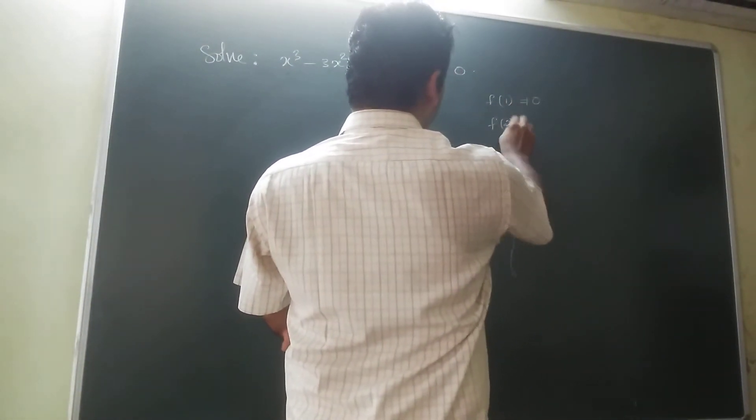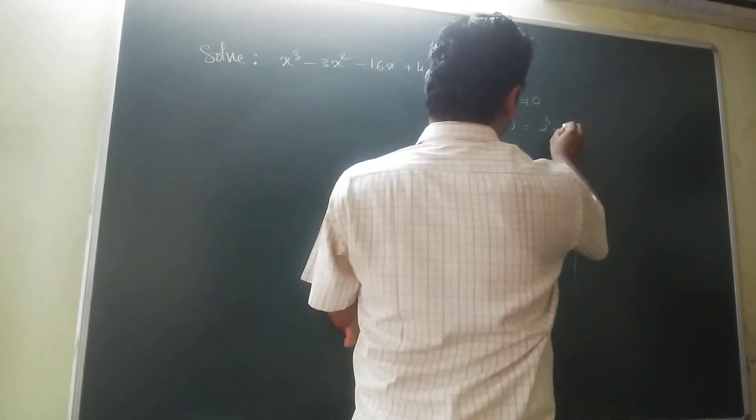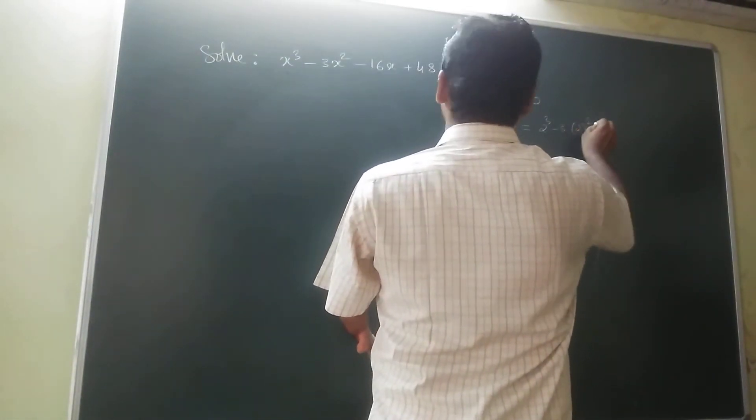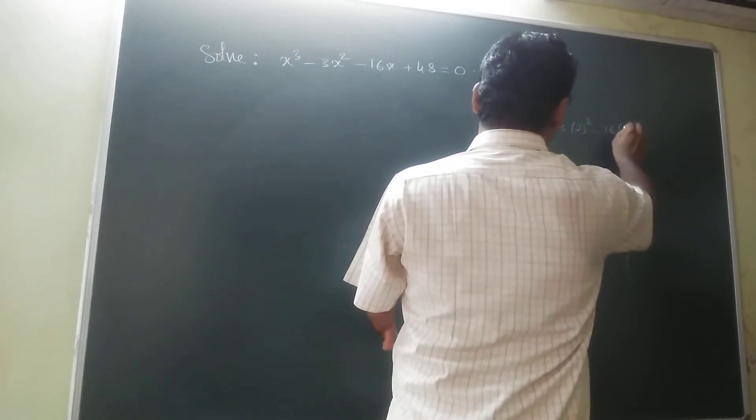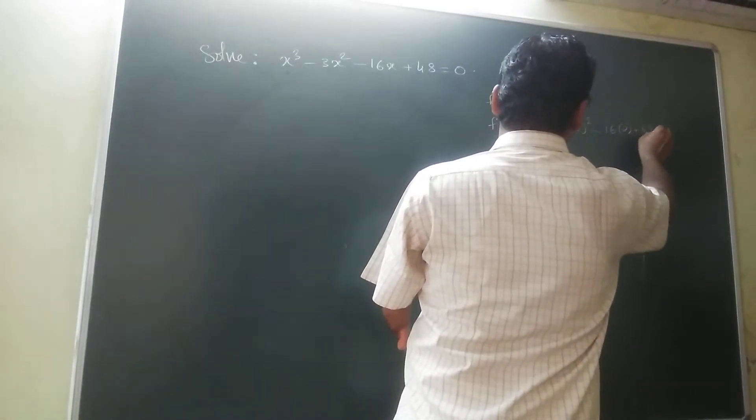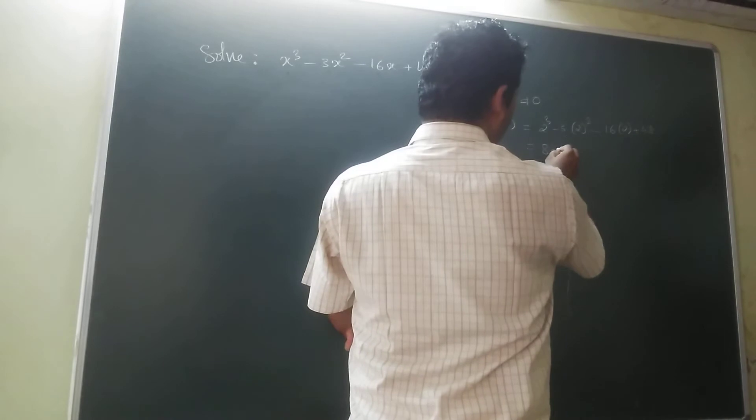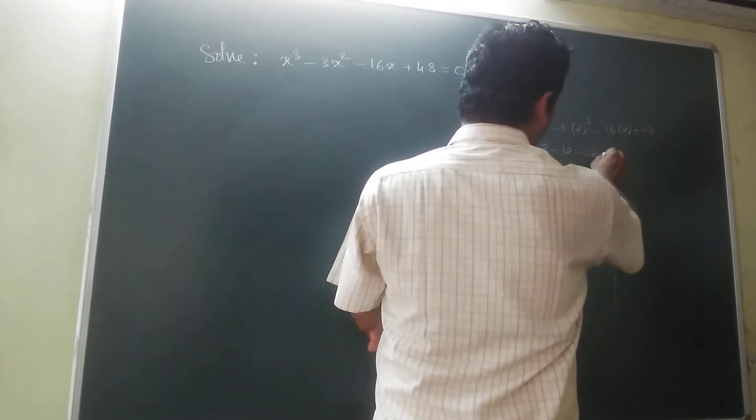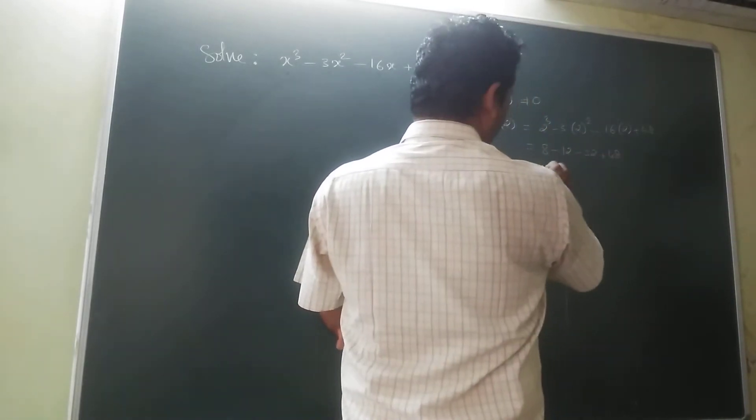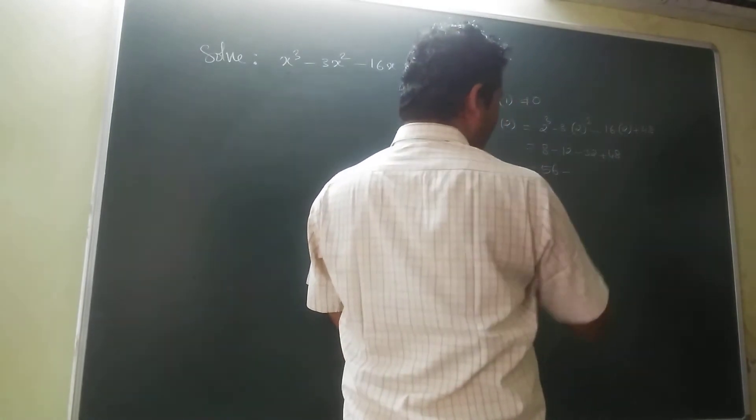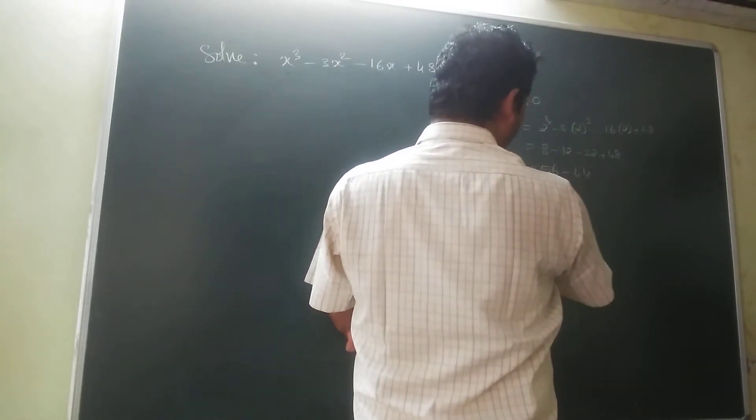Check f of 2. Put 2: 2 cube minus 3 into 2 square minus 16 into 2 plus 48. 8 minus 12 minus 32 plus 48. So that is 56 minus 44, not equal to 0.